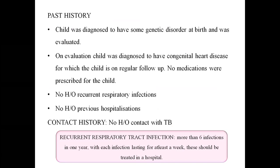Past history: child was diagnosed to have some genetic disorder at birth; on evaluation, diagnosed to have congenital heart disease, for which the child is on regular follow-up. No medications prescribed, no history of recurrent respiratory tract infections, no history of previous hospitalizations. This clearly suggests the child has some acyanotic heart disease. No previous hospitalizations and no recurrent RTIs indicate a normal course — a mild variant of heart disease might be present.